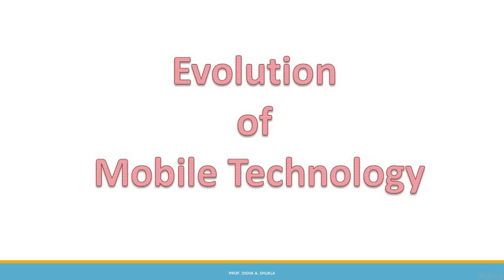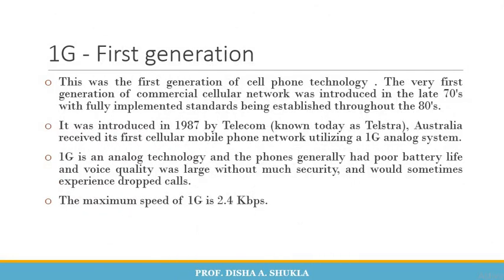Starting with the very first thing, that is the first generation, 1G. This was the first generation of cell phone technology. The very first generation of commercial cellular network was introduced in the late 70s, with fully implemented standards established throughout the 80s. It was introduced in 1987 by a telecom known as Telstra. Australia received its first cellular mobile phone network utilizing a 1G analog system. 1G is an analog technology and the phones generally had poor battery life and voice quality, with little security and sometimes experienced dropped calls. The maximum speed of 1G is 2.4 kbps.